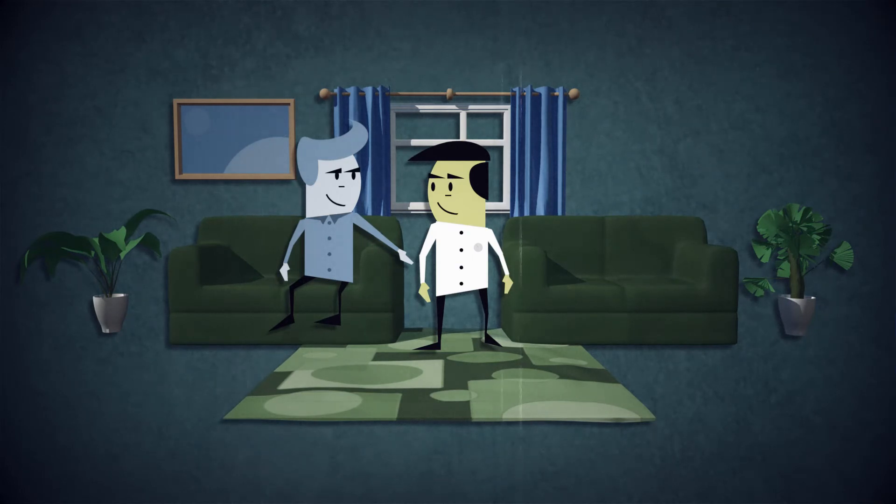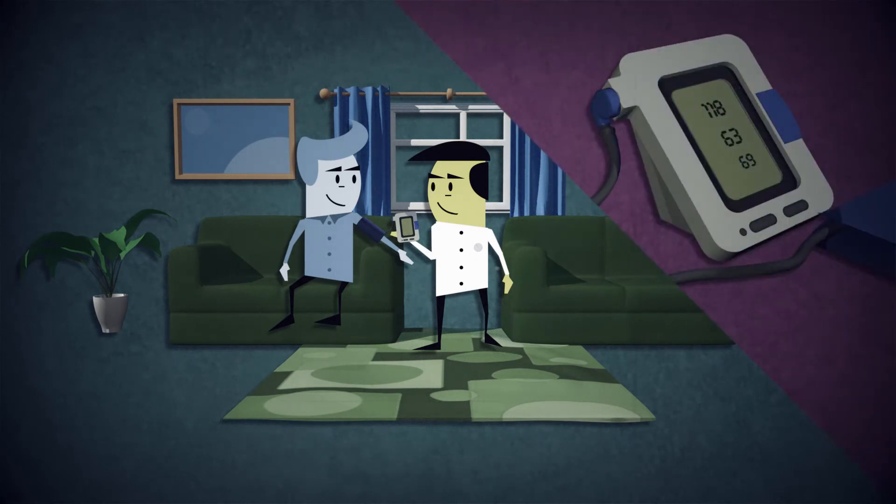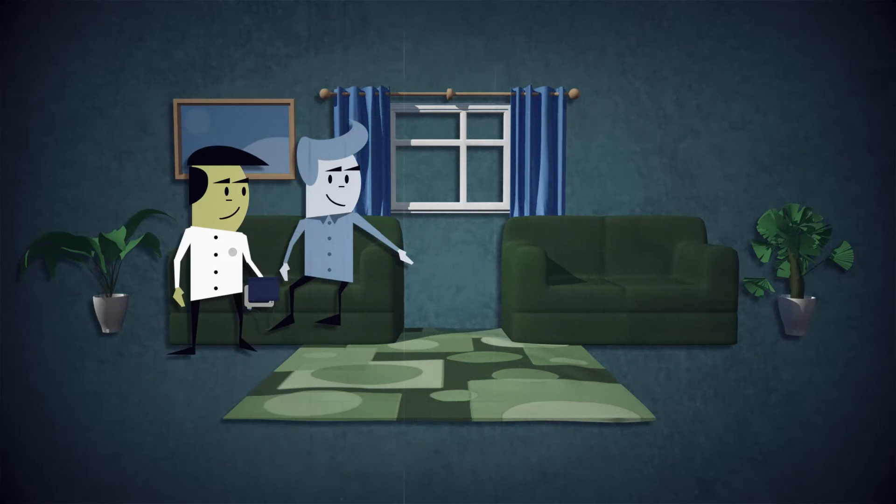Measure blood pressure in both arms. If there's a difference of more than 20 mm of mercury, the pressure should be re-measured. If the difference remains after a second reading, perform subsequent measurements using the arm which gave the higher reading.